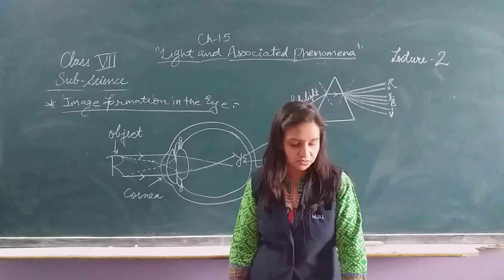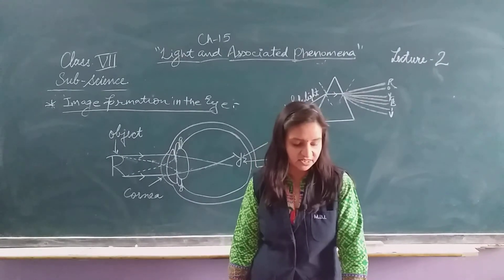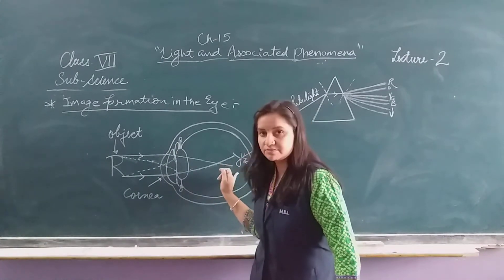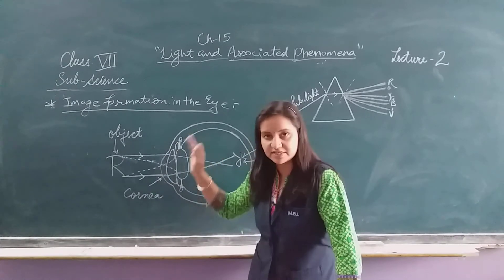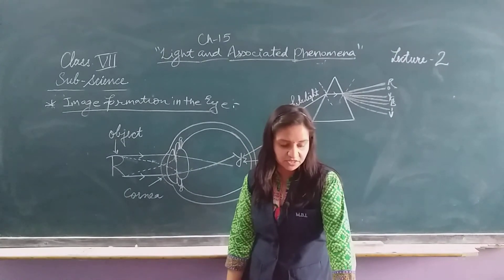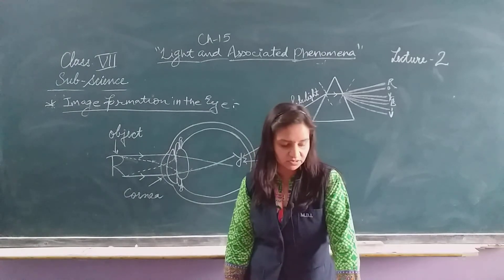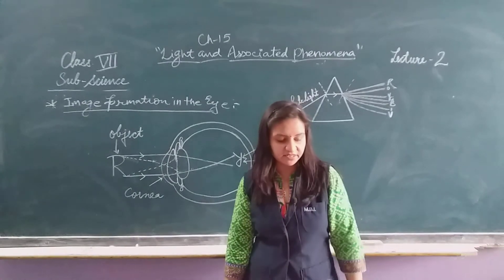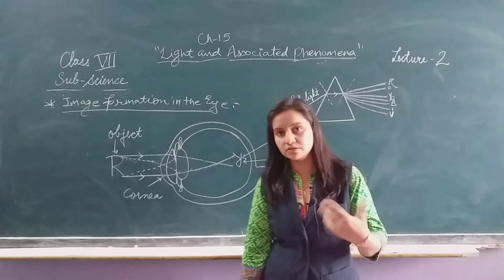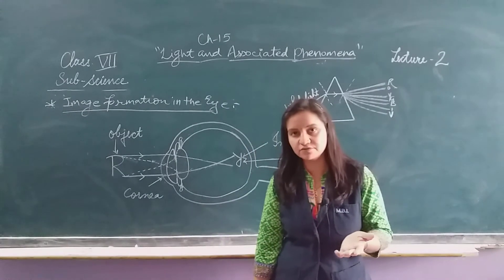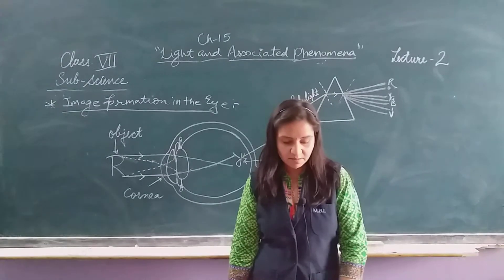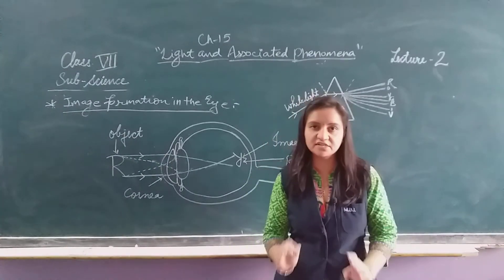The brain integrates the information and interprets it to form a real and erect image with the correct size. So although the image on the retina is inverted, the brain corrects it.